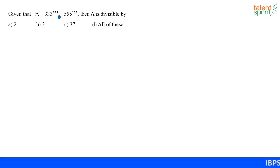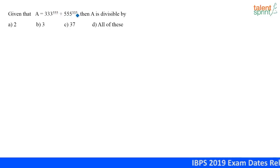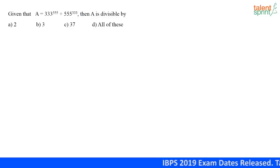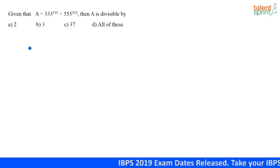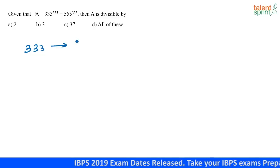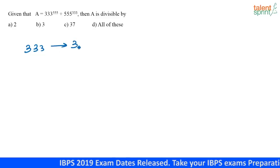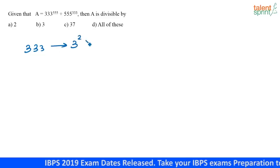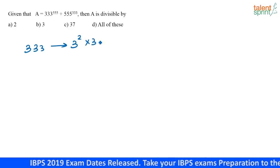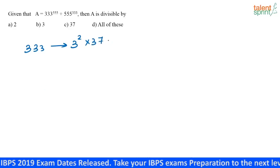Given that A is equal to 333 to the power 555 plus 555 to the power 333, A is divisible by what? How can you write 333 in terms of its factors? 333 is nothing but 3 squared into 37.